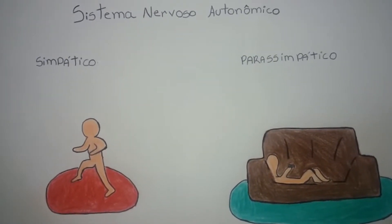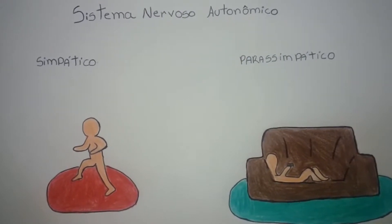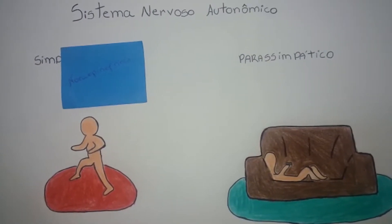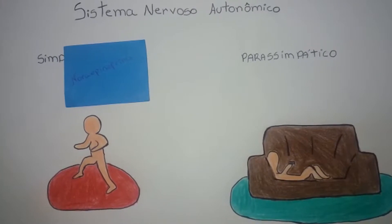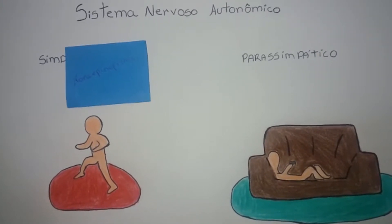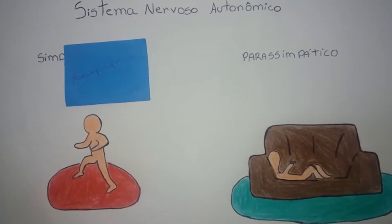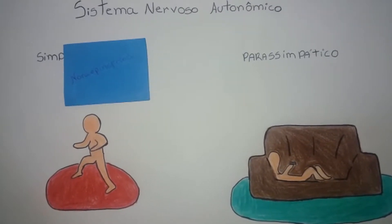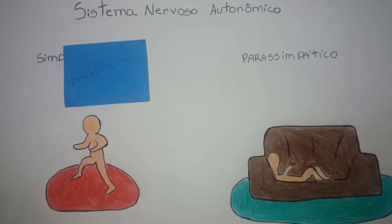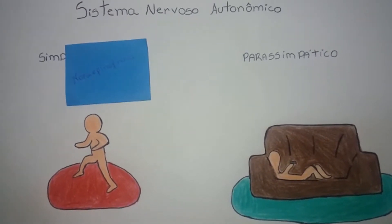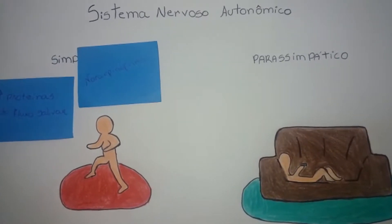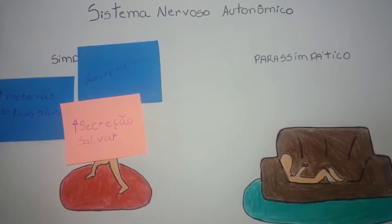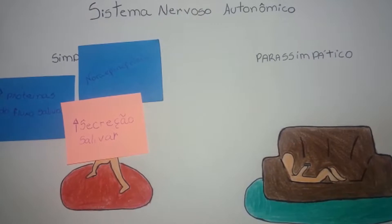Os neurônios simpáticos pós-ganglionares liberam norepinefrina, que interage com receptores beta-adrenérgicos nas células acinares e ductais. A ativação desses receptores leva à estimulação de adenilato-ciclase e produção de monofosfato cíclico de adenosina (AMPc). Esse tipo de regulação promove um aumento de proteínas que compõem a saliva, aumentando a secreção salivar. Situações de boca seca, comuns em véspera de prova, são reguladas por ação simpática, pois há inibição da secreção de água do fluxo salivar.